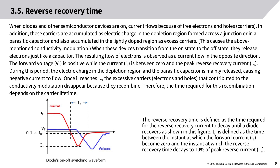When these devices transition from the on state to the off state, they release electrons like a capacitor, resulting in current flow in the opposite direction. The forward voltage VF is positive while current IF is between zero and the peak reverse recovery current IRR. During this period, charge in the depletion region and parasitic capacitor is mainly released. Once IF reaches IRR, the excess carriers that contributed to conductivity modulation disappear through recombination.